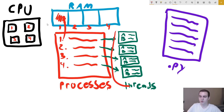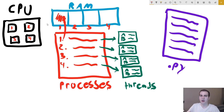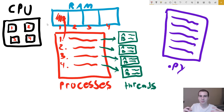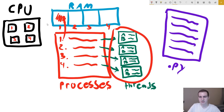So now let's talk about threads — where do these come in? Each process is made up of a bunch of different threads, and these threads are essentially different tasks that are running. Now, only one thread can be running at a time — we can't have two threads running at the exact same time. They can be stacked up, but their commands and their execution have to happen one after another. They can't happen in parallel; they're happening in sequence.